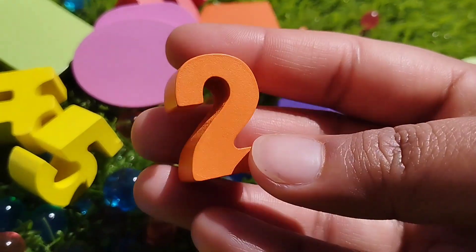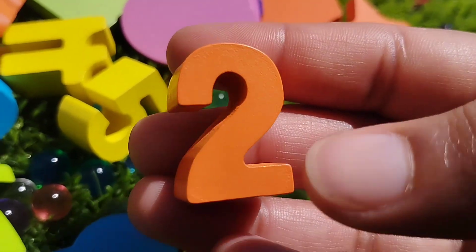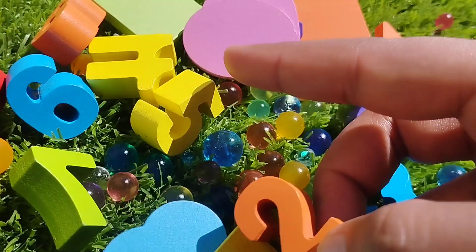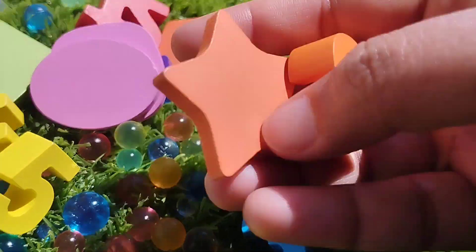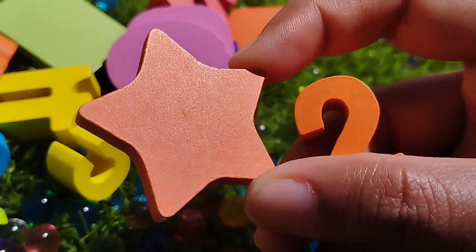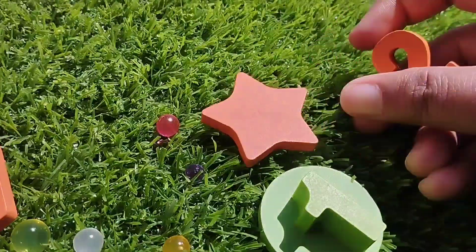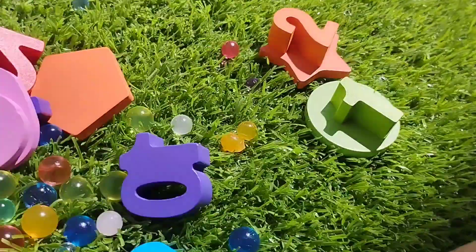The next number is two. Number two is orange. Where is orange? This is a star shape. Star is orange. Number two.